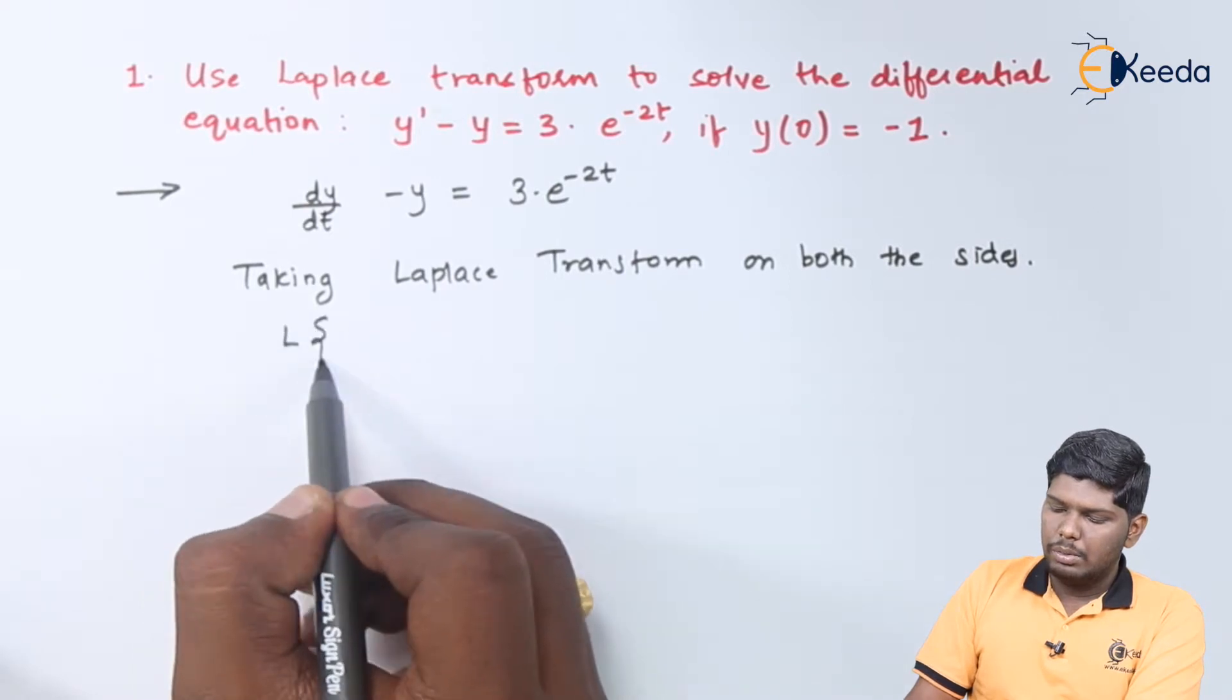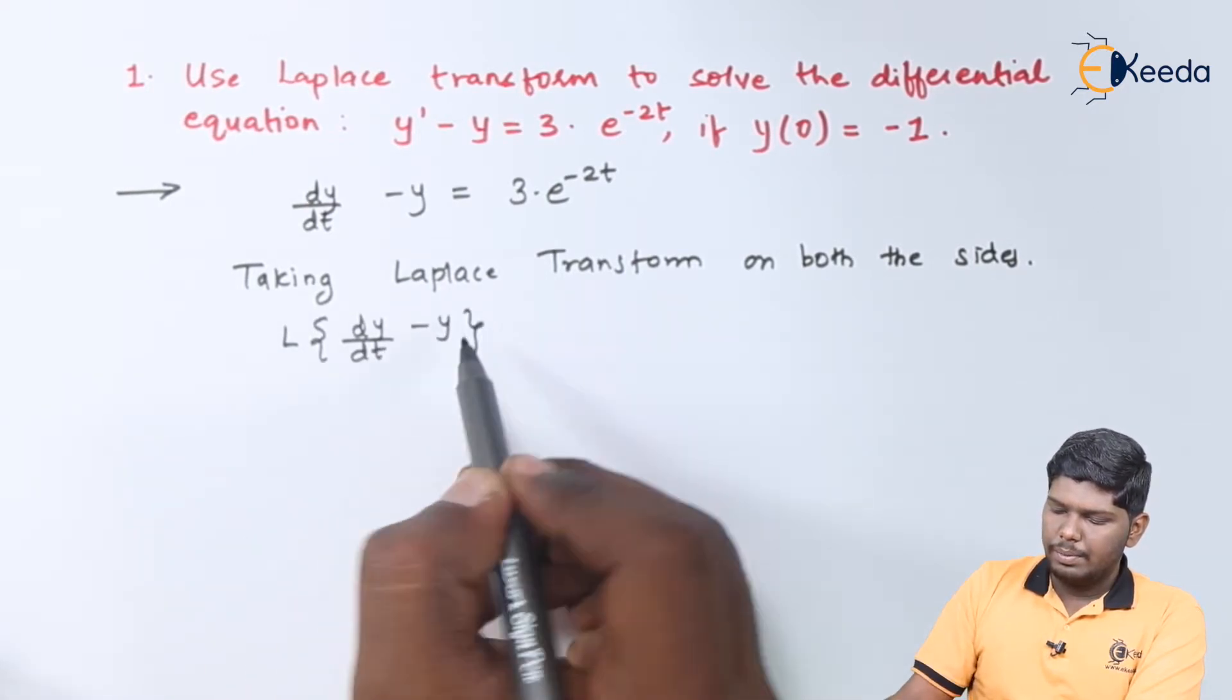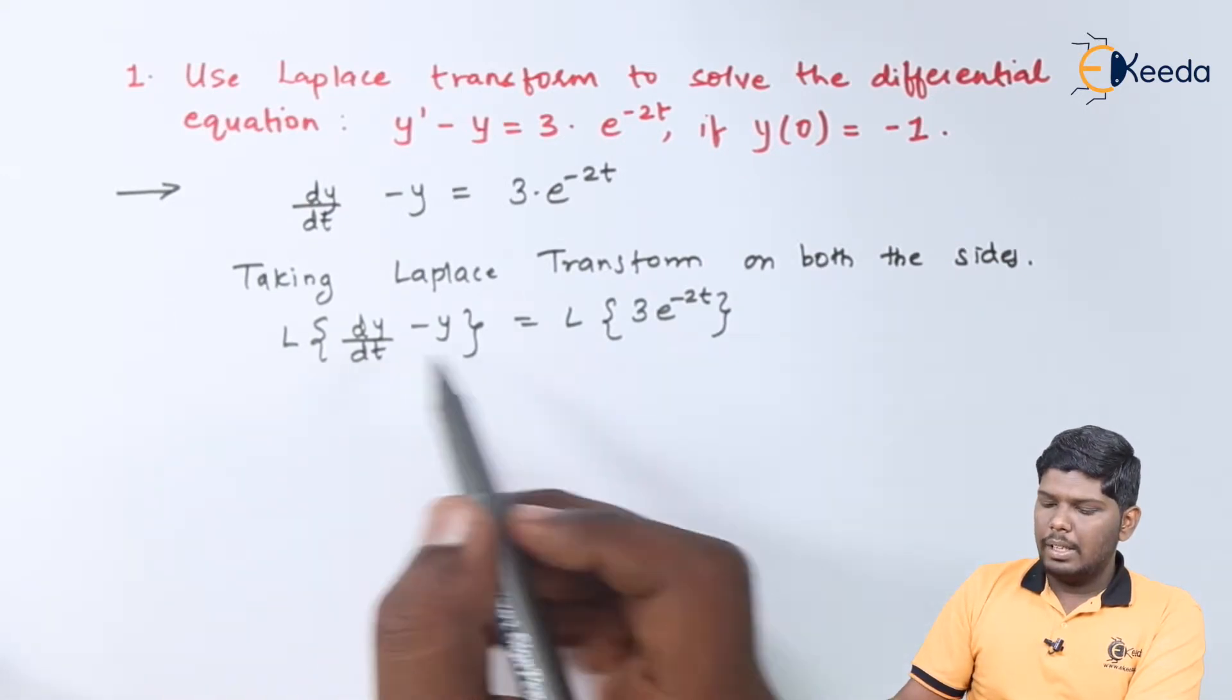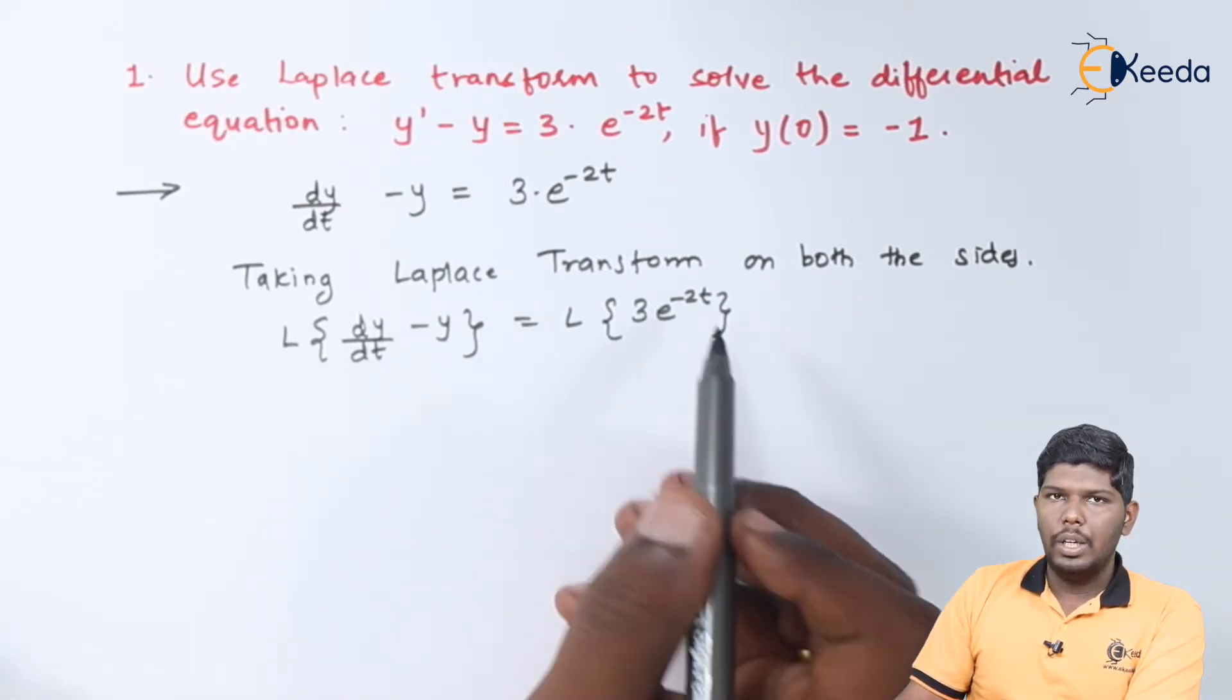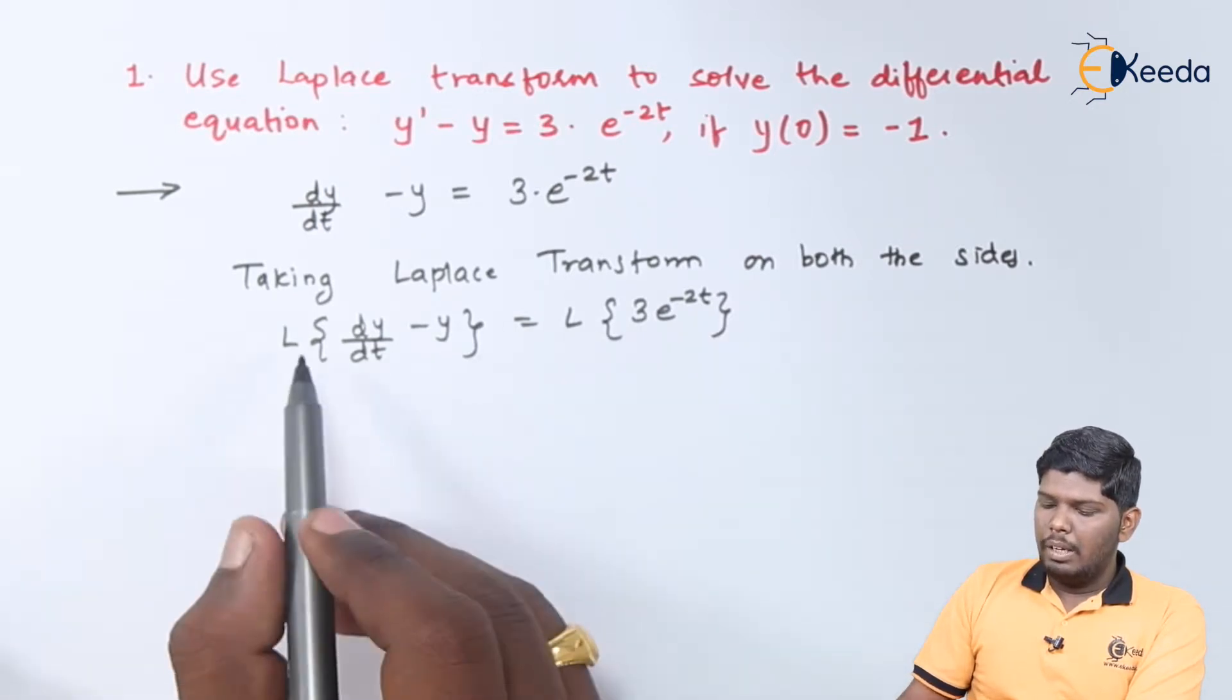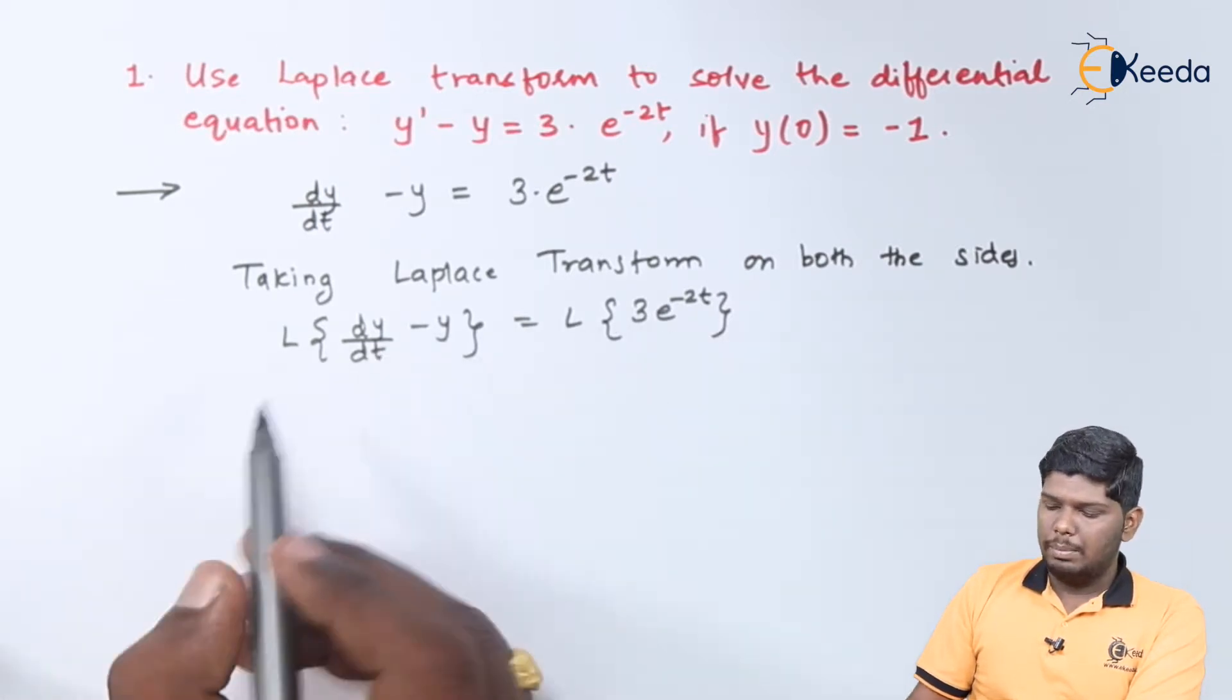Taking Laplace transform on both sides, this will give you Laplace of dy by dt minus y is equal to Laplace of 3 into e raised to minus 2t. Now, by using the linear property, we can separate the Laplace to each of the terms.